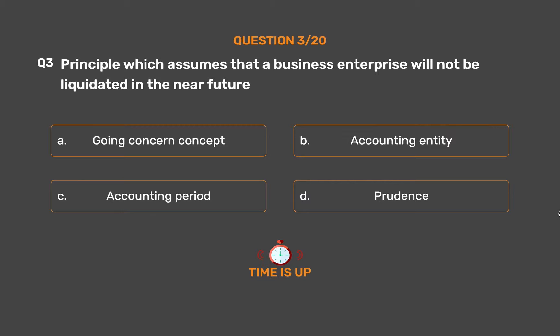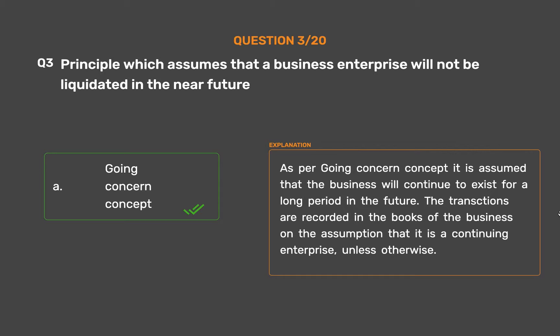The correct answer is Option A: Going Concern Concept. As per the Going Concern Concept, it is assumed that the business will continue to exist for a long period in the future. The transactions are recorded in the books of the business on the assumption that it is a continuing enterprise, unless otherwise stated.